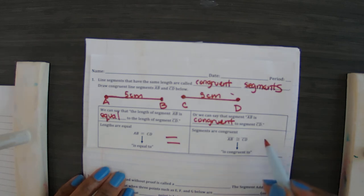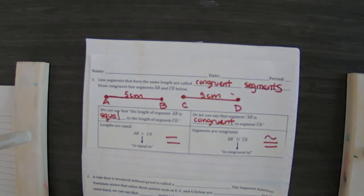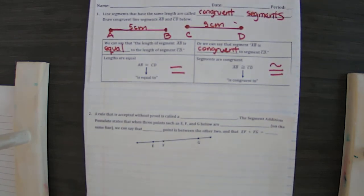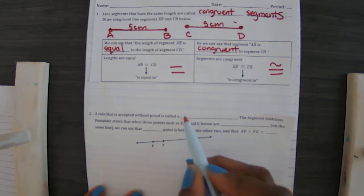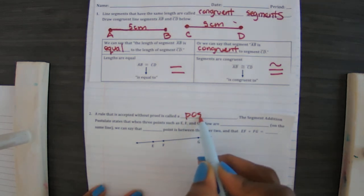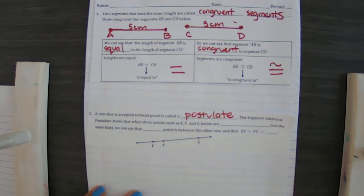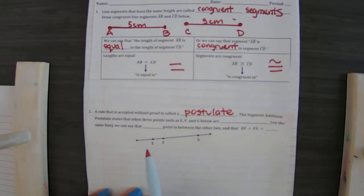The next part of this: a rule that is accepted without proof is called a postulate. The segment addition postulate states that when three points, such as E, F, and G below—there's E, F, and G—